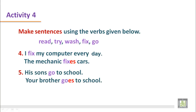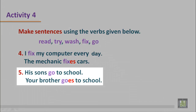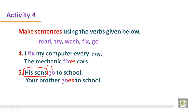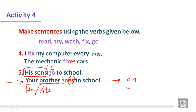Number five: his sons go to school. The subject 'his sons' is plural, so the verb is only the base form: go. But in the second sentence, your brother goes to school. 'Your brother' is a third person singular subject, as if it were 'he' or 'Ali'. So the verb is added with ES at the end. The base form is 'go', but with third person singular it becomes 'goes'.